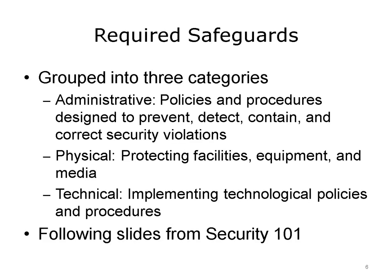The required safeguards are grouped into three categories: administrative, physical, and technical. Administrative safeguards are policies and procedures designed to prevent, detect, and contain security violations. Physical safeguards include protecting facilities, equipment, and media where medical information is stored. Technical safeguards are various technical policies and procedures governing use of and access to PHI. The following slides show some features from each category, though these aren't exhaustive. The overview article referenced earlier further enumerates all of these safeguards.